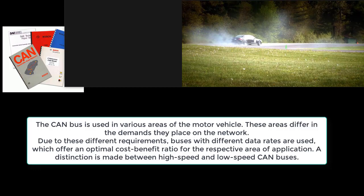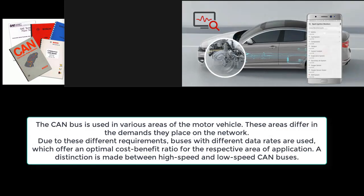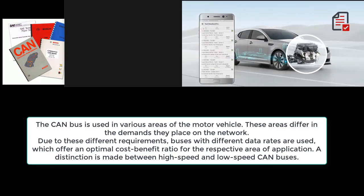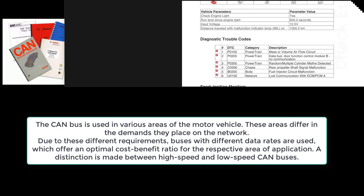Due to these different requirements, buses with different data rates are used, which offer an optimal cost-benefit ratio for the respective area of application. A distinction is made between high-speed and low-speed CAN buses.